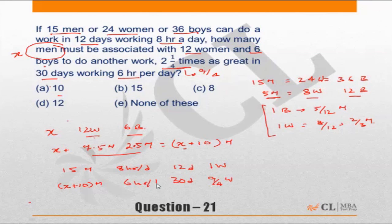We can apply chain rule: x plus 10 should be equal to originally there were 15 men. The number of hours per day have reduced, so the number of people should increase, so times 8/6. The number of days has gone up from 12 to 30, so that means the number of men should reduce, so times 12/30. The amount of work earlier was 1, now it is 9/4, that means the amount of work has increased, so the number of men should also increase, so times 9/4.